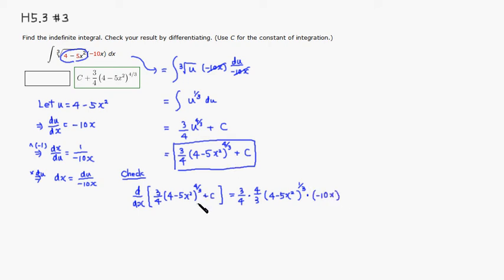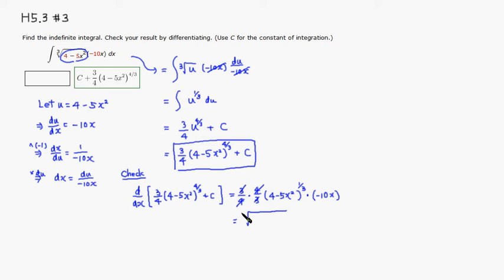The derivative of the constant term is zero, so we ignore it. Cleaning up, the four on top cancels with the four on the bottom, and the three on top cancels with the three on the bottom.